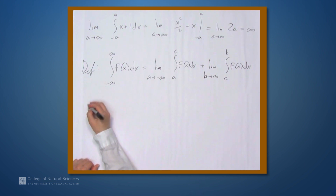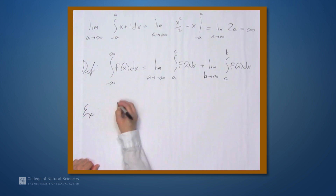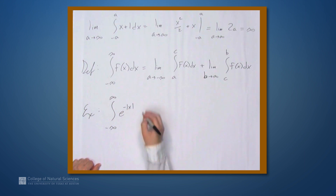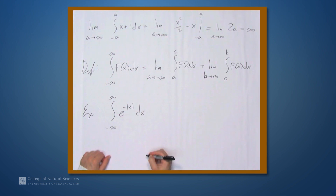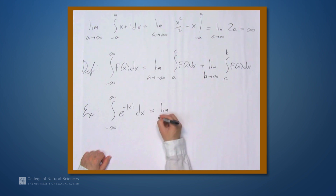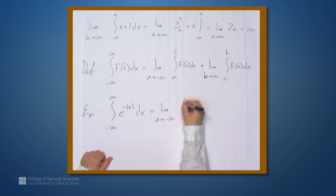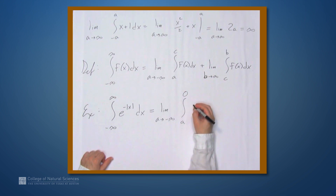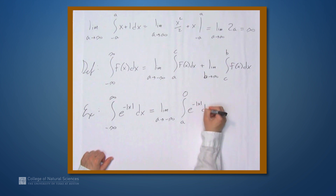Let's look at an example: the integral from negative infinity to infinity of e to the negative absolute value of x dx. By definition, we can split it up into two limits. We'll get the limit as a approaches negative infinity of the integral from a to 0 of e to the negative absolute value of x dx.